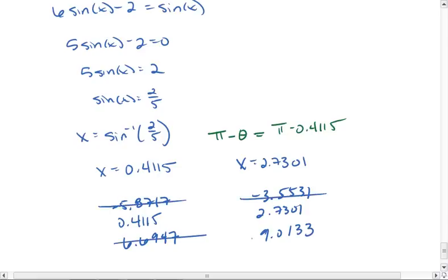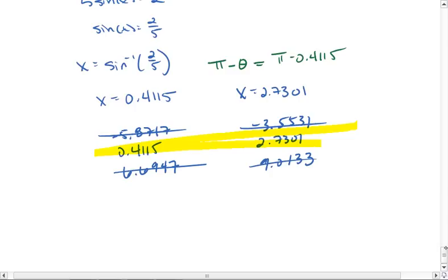Okay, all four of these new numbers are outside our interval. So the two numbers we want to use are the 0.4115 and 2.7301. Thus, our possible angle measures are 0.4115 and 2.7301 radians. That's because those are the only numbers inside of our interval 0 to 2 pi.